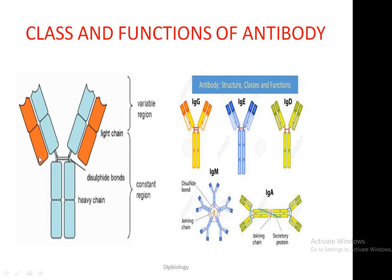Light chains are attached to heavy chains with the help of two disulfide bonds in the arm of constant regions. Similarly, two heavy chains are also held together with the help of disulfide bonds, and this hinge region gives flexibility to the antibody molecules.